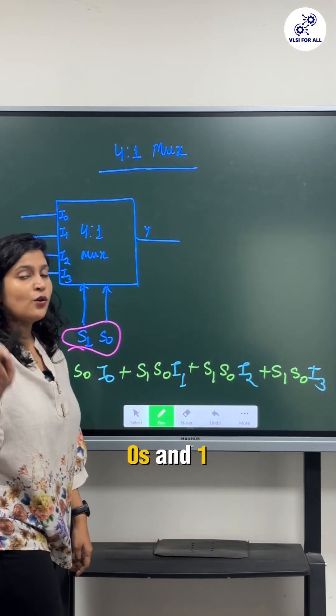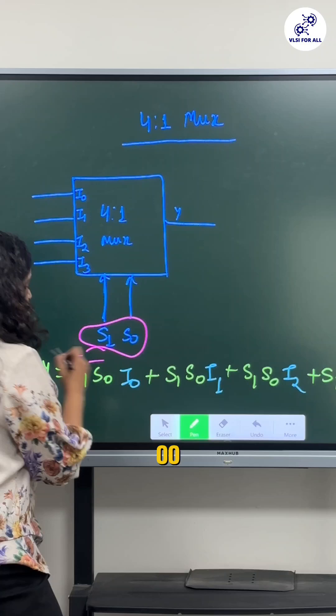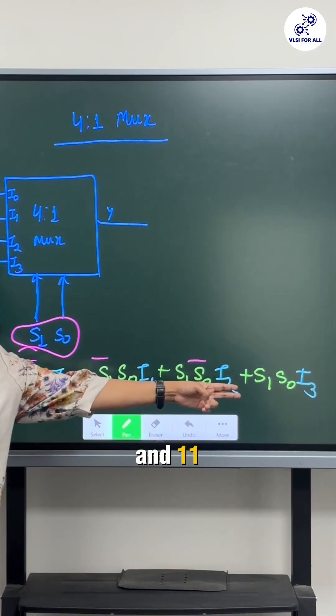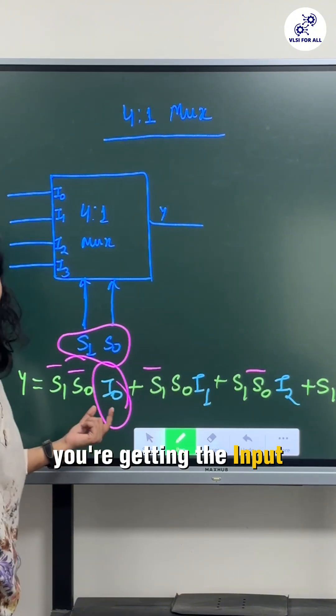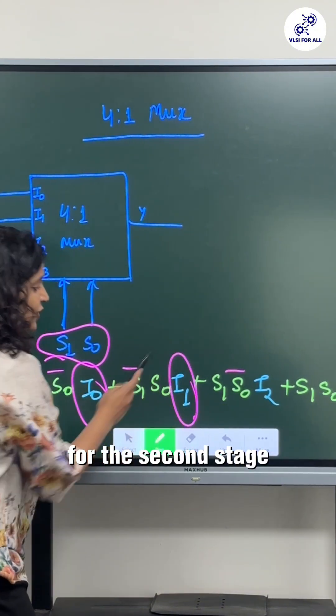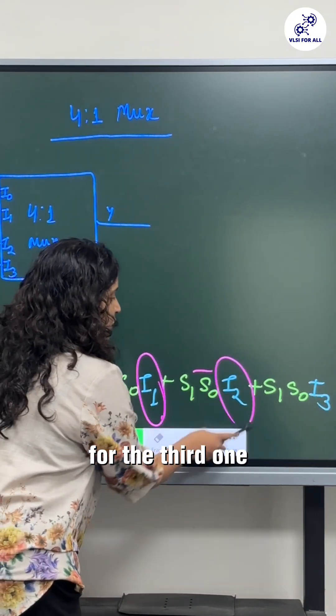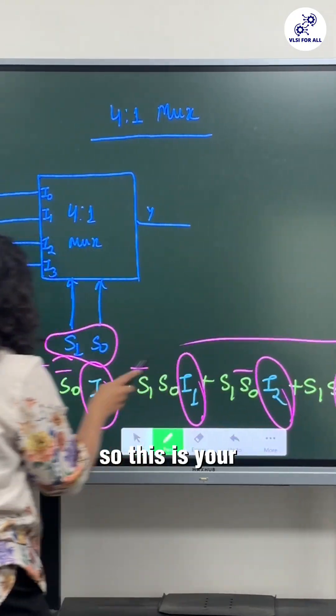And for the first thing you are getting the input as I0, for the second stage for the second selection lines you are getting the input as I1, for the third one you are getting I2, and I3. So this is your final expression for a 4:1 mux.